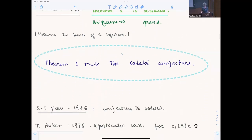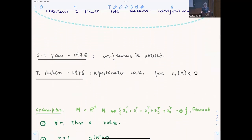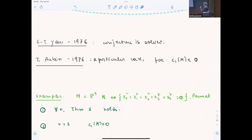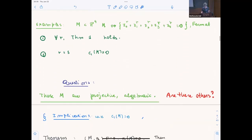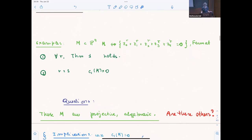In 1957, Calabi, in a volume in honor of Lefschetz who was a professor at Princeton, proves the uniqueness of the metric and has some doubts about the existence. So the Calabi conjecture is born. Fast forward, and Yau in 1976 solves the conjecture. Thierry Aubin had solved a particular case for C1 negative, the general type.